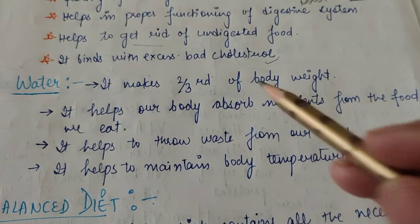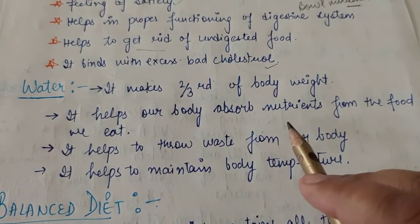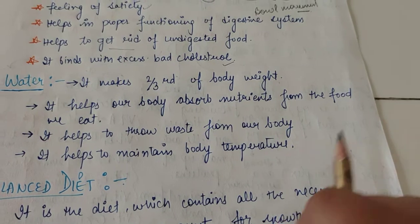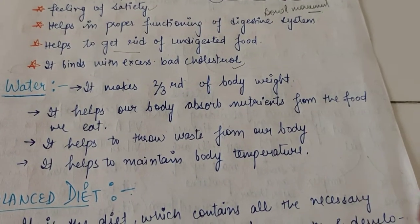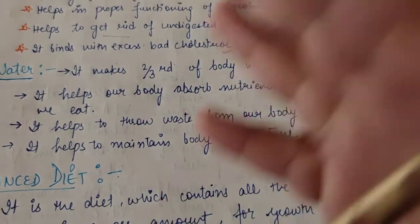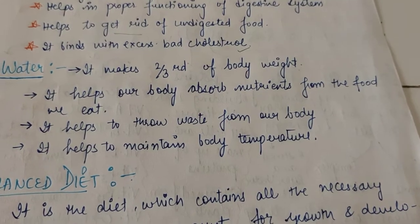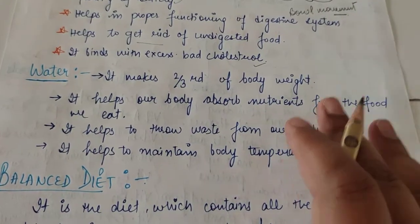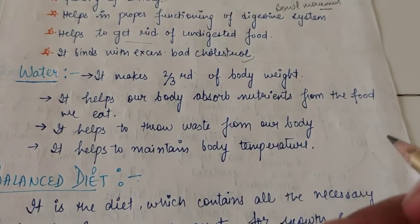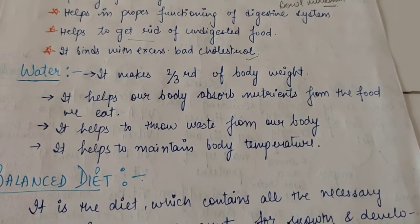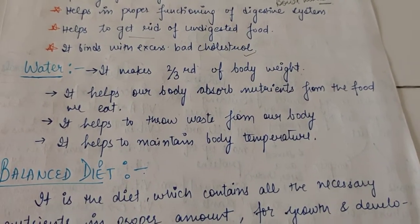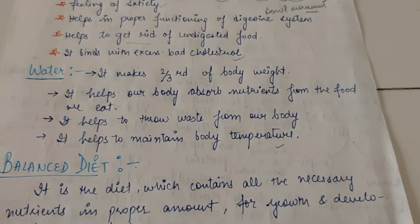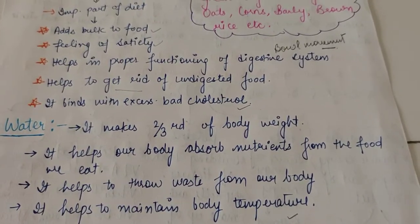The next and very important part of a diet is water. Water makes up about two-thirds of the weight of our body. It helps our body absorb necessary nutrients from food and transport them throughout the body, since water makes up the main part of blood. It also helps throw waste from the body in the form of urine — waste materials like uric acid, urea, and strong acids are expelled with water. Water also helps to maintain our body temperature.